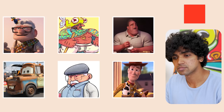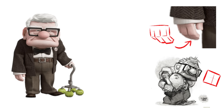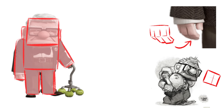Then there are characters designed with a more boxy shape language, which indicates a sense of stability and groundedness — often indicating a sense of not being willing to change. For example, the character from the movie Up is very boxy in nature, from its face to the body to the fingers, everything.